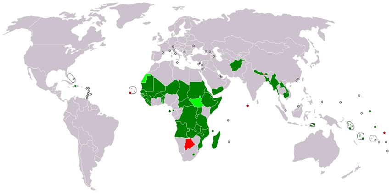The UN had set Millennium Development Goals from a blueprint developed by all of the world's countries and leading development institutions in order to evaluate growth. These goals ended in 2015, to be superseded by the Sustainable Development Goals. The concept of the developing nation is found, under one term or another, in numerous theoretical systems — for example, theories of decolonization, liberation theology, Marxism, anti-imperialism, modernization, social change and political economy.